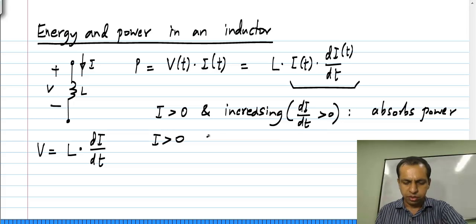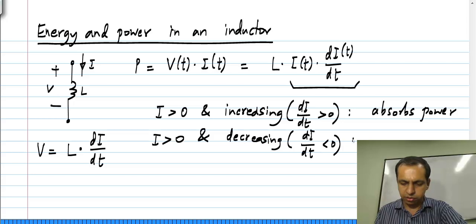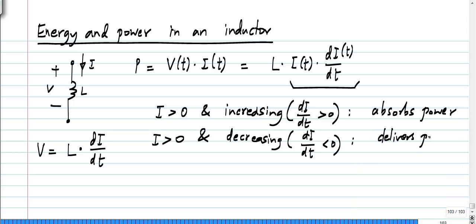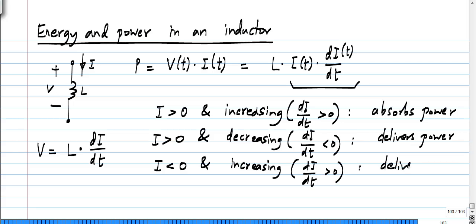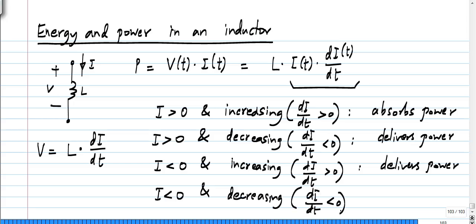Similarly, if I is more than 0 and decreasing, that is the time derivative is less than 0, then it delivers power. And if I is less than 0 and increasing (becoming less negative), the time derivative will be more than 0 and it delivers power, because the product of negative current and a positive derivative yields a positive number. Finally, for negative I and decreasing, it absorbs power.